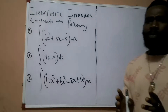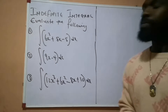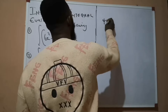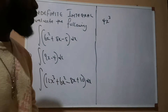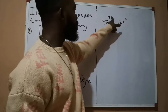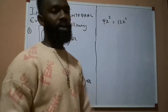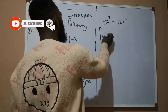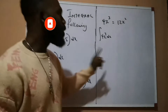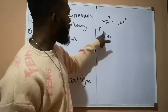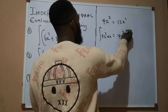Before we start solving the problems on the board, I want to give a quick difference between differentiation and integration. When we differentiate a function, for example 4x raised to the power 3, our answer would be 12x raised to the power 2. We use 3 to multiply 4 to give us 12, and then subtract 1 from 3 to give us 2. But if we should integrate 4x raised to the power 3, we don't multiply — rather we add 1 to the existing power, which is 3. So it becomes 4x raised to the power 3 plus 1, over 3 plus 1, plus k.